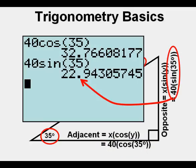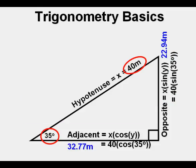We see that the base is 32.77 meters rounded to the nearest centimeter. We can do the same thing with the height of the triangle by taking 40 times the sine of 35 degrees which is 22.94 meters rounded to the nearest centimeter. So we start with just one side and an angle and we're able to determine all sides just from that information.